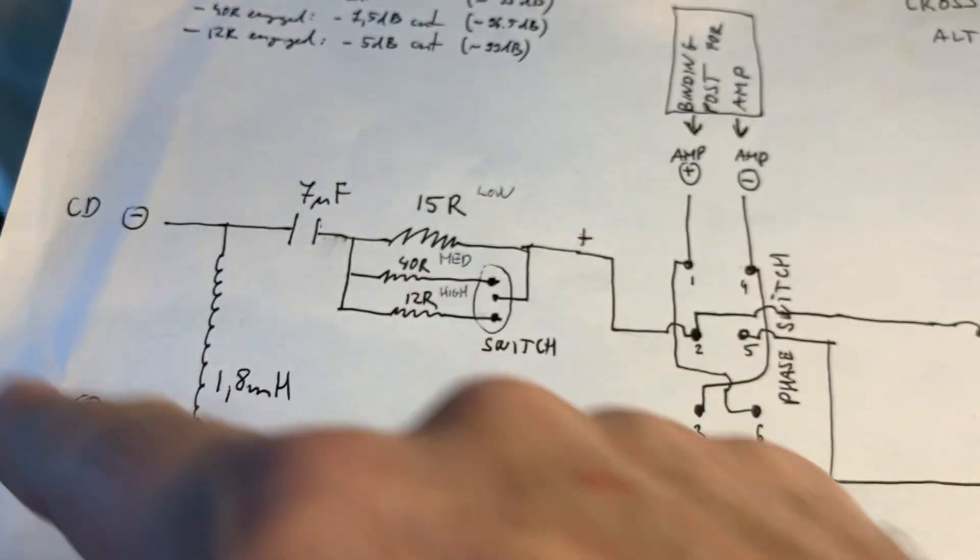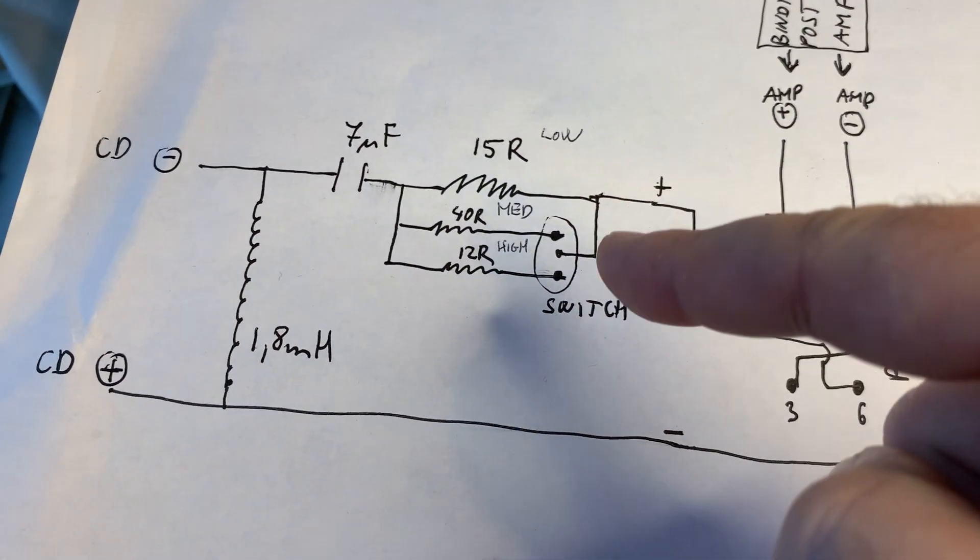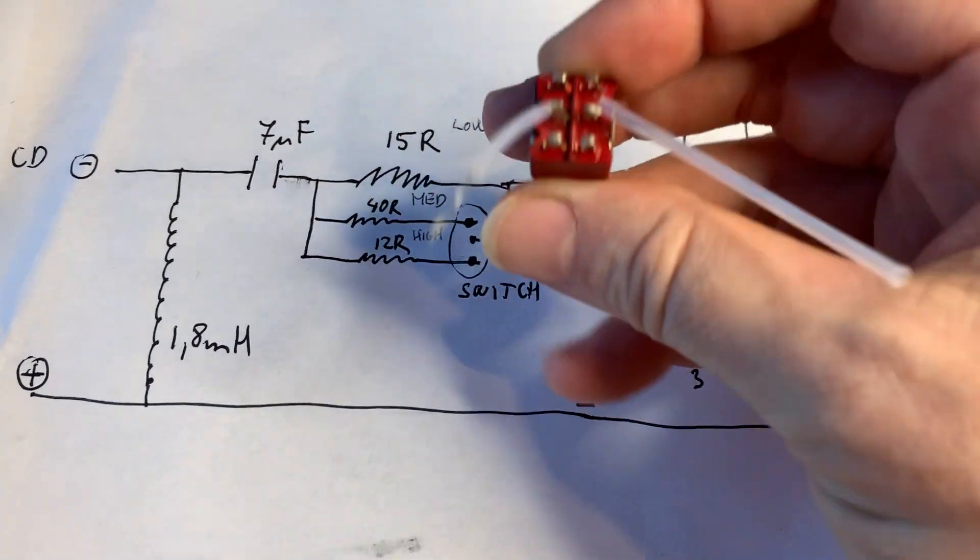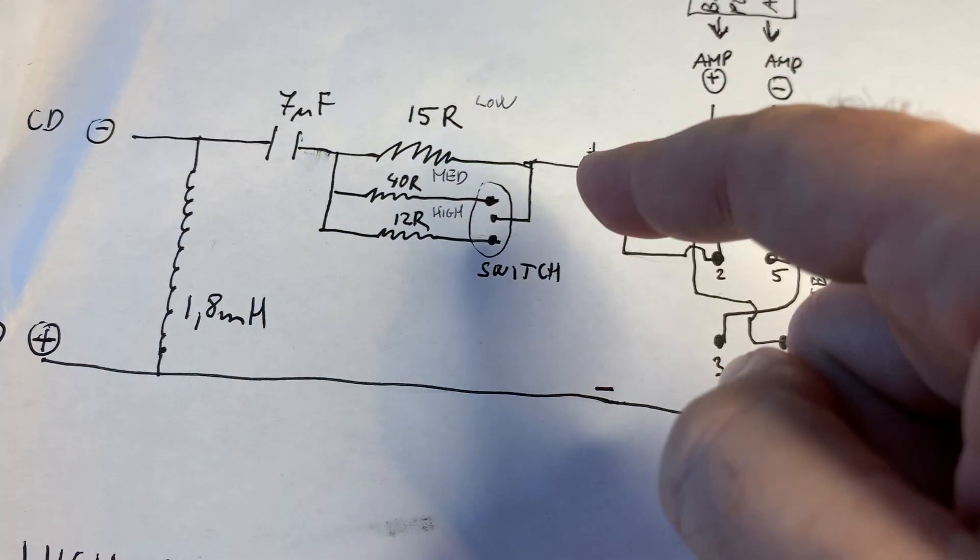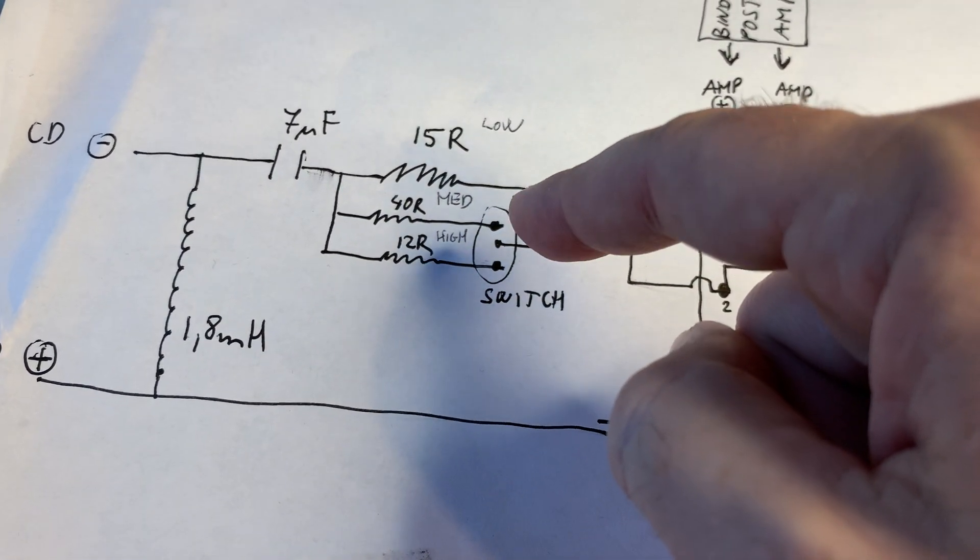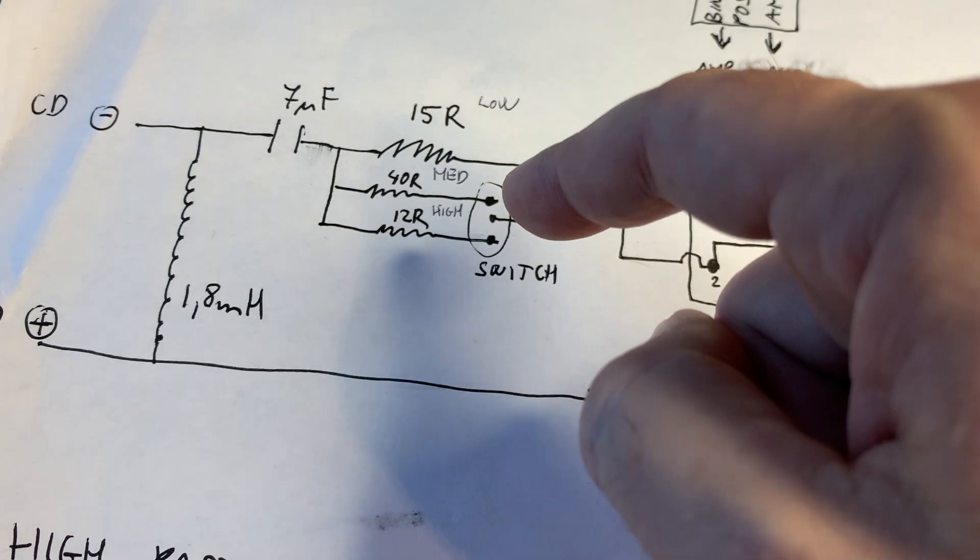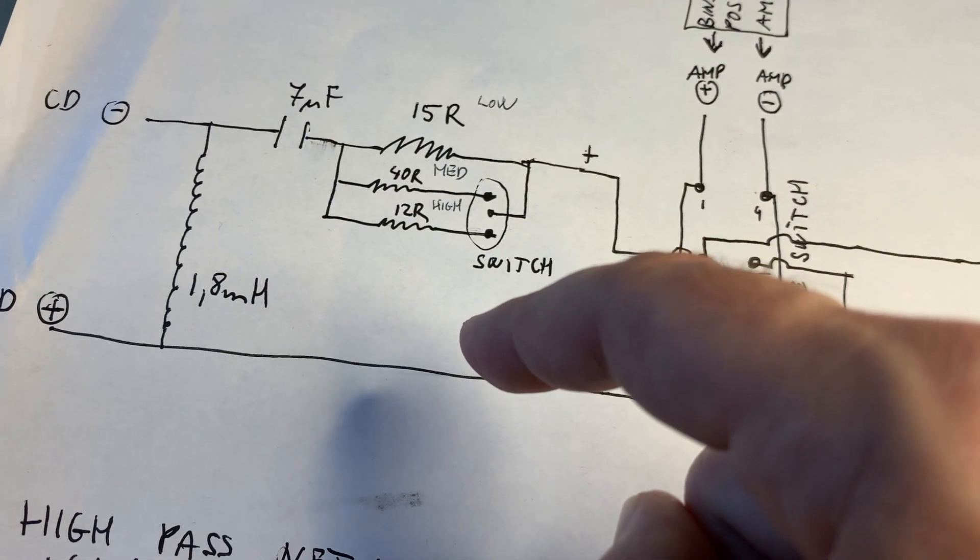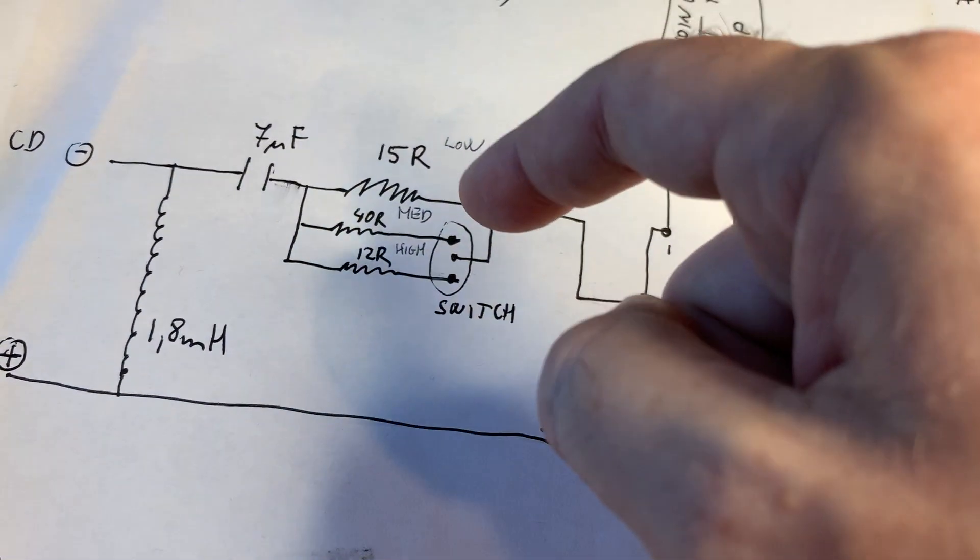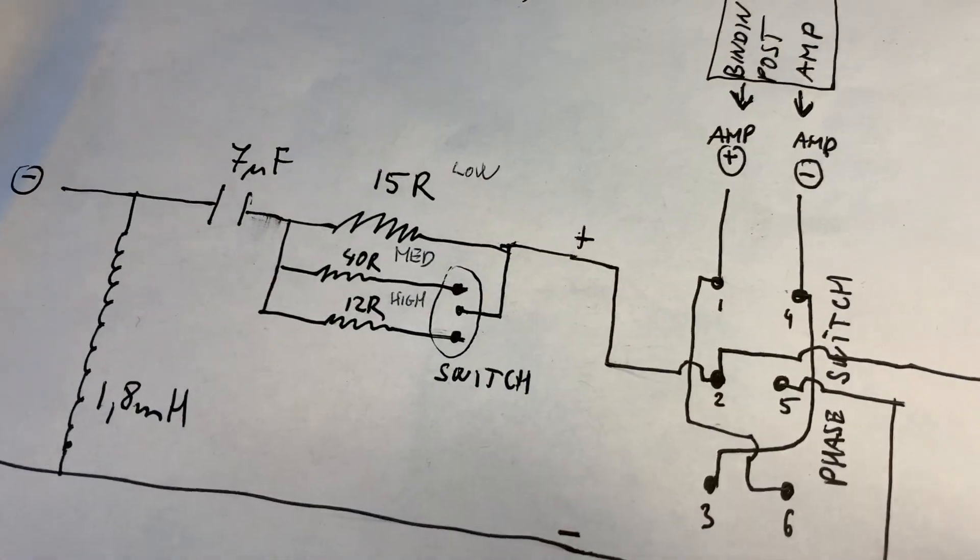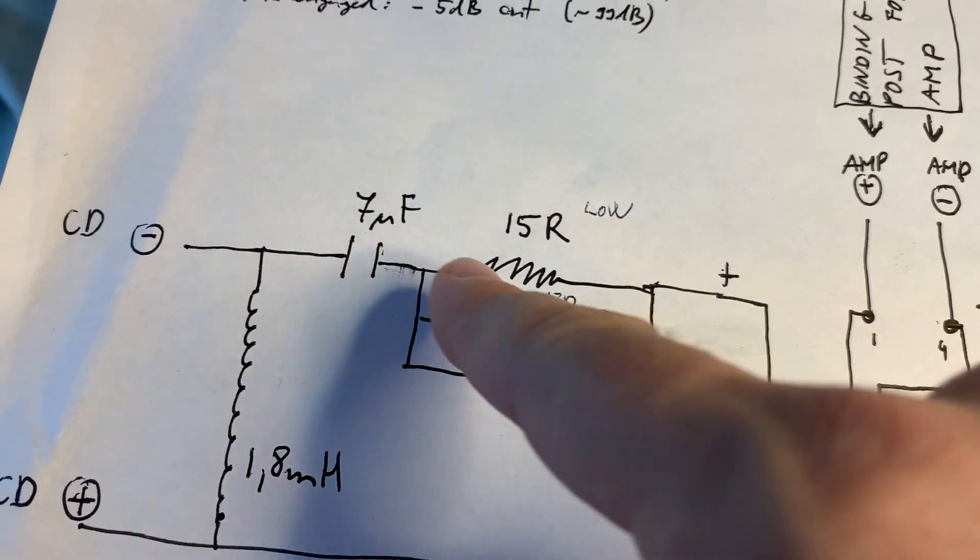The high-pass network that goes to the compression driver is a bit more complicated. Here, we also have a switch that is similar as this switch, but only one unit, like half of this. It's a three-position switch that has an on, off, on. If the whole thing is off, then you have only a 15 ohm resistor here in the path. If you flip one way, then you engage a 12 ohm resistor in series.